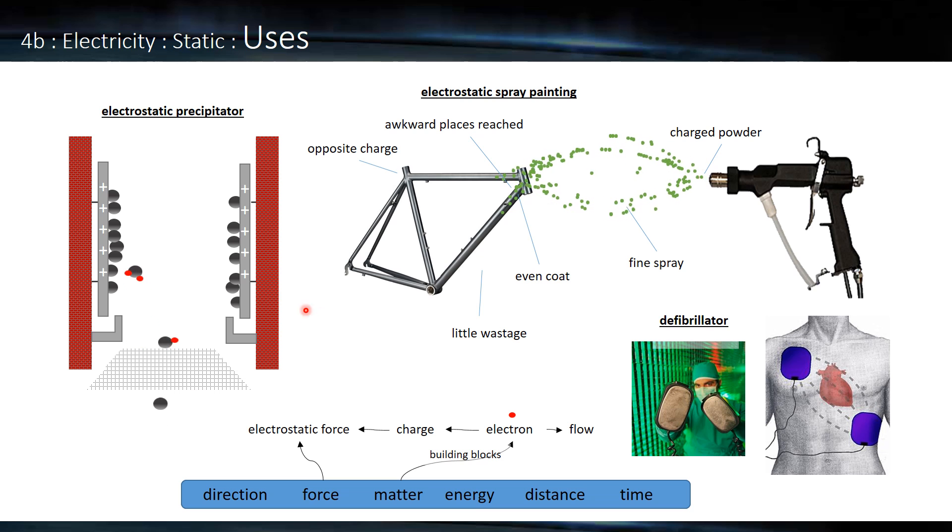So working left to right, we've got the electrostatic precipitator here. Now what's going on here, this is in a chimney. We've got smoke particles coming up here from the furnace. And as you can see, there's a grid here and they pick up a charge, a negative charge. So the electrons you can see are now on the soot particles.